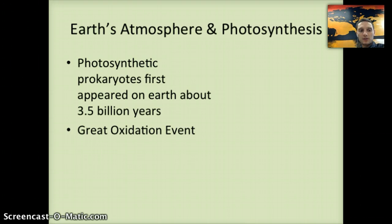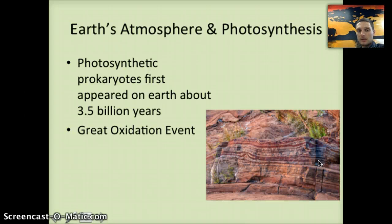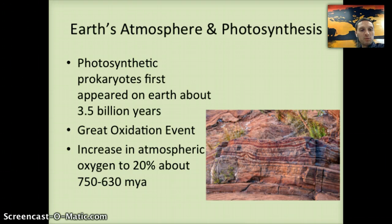This occurred by about 2.2 billion years ago. The increase in oxygen caused an oxidation of dissolved iron in ocean water, causing it to precipitate into the seabed, forming specific rock layers — iron-banded formations — which you can see in various rock layers throughout the United States and the world. If you've ever been to Sedona, Arizona, the red-banded areas are iron that's been oxidized. The oxygen in the atmosphere didn't stop there; as oxygen continued to increase and diversity of organisms grew — especially with the evolution of plants — atmospheric oxygen increased to about 20%, which is about what we see today, occurring about 750 to 630 million years ago.